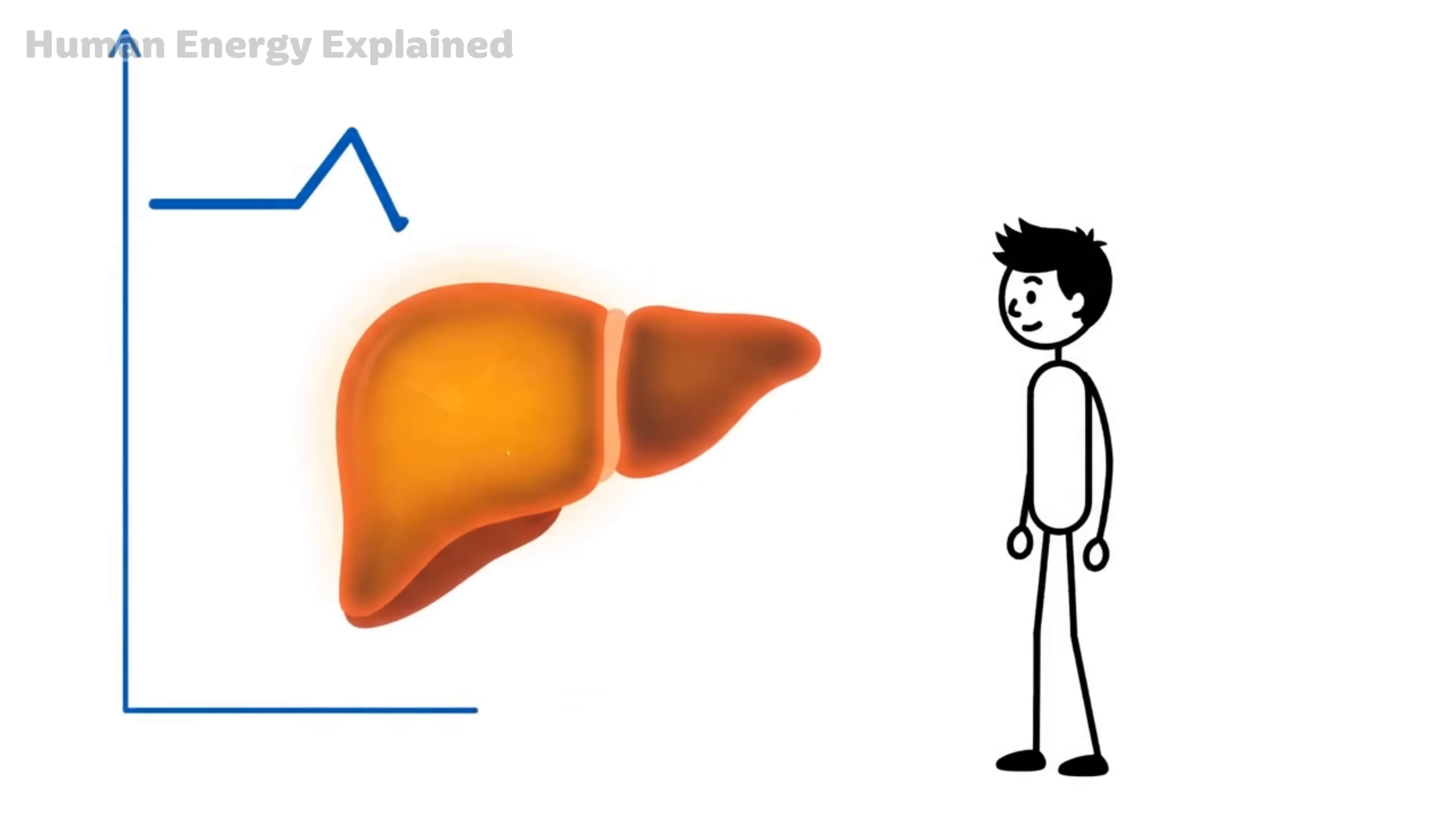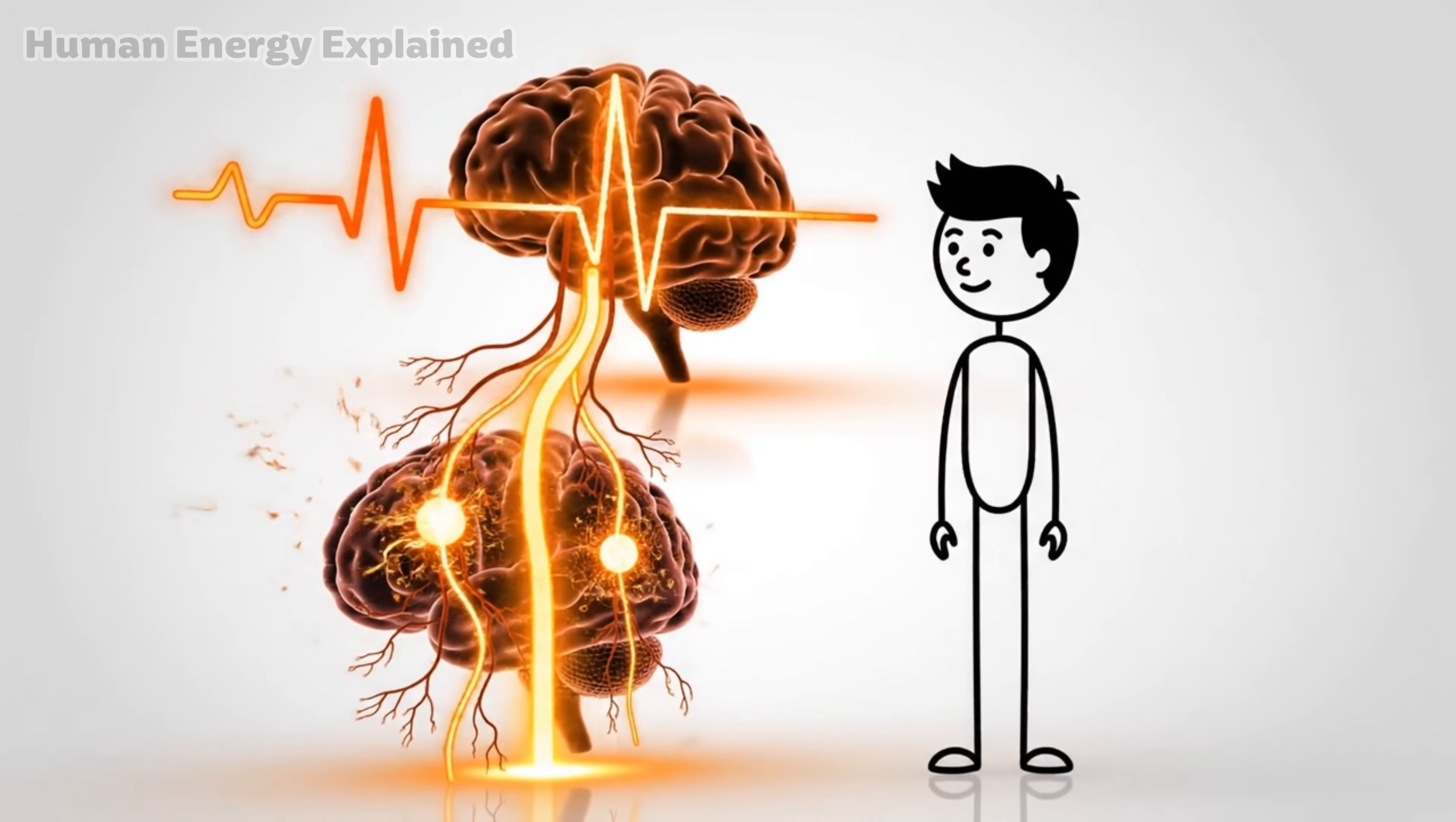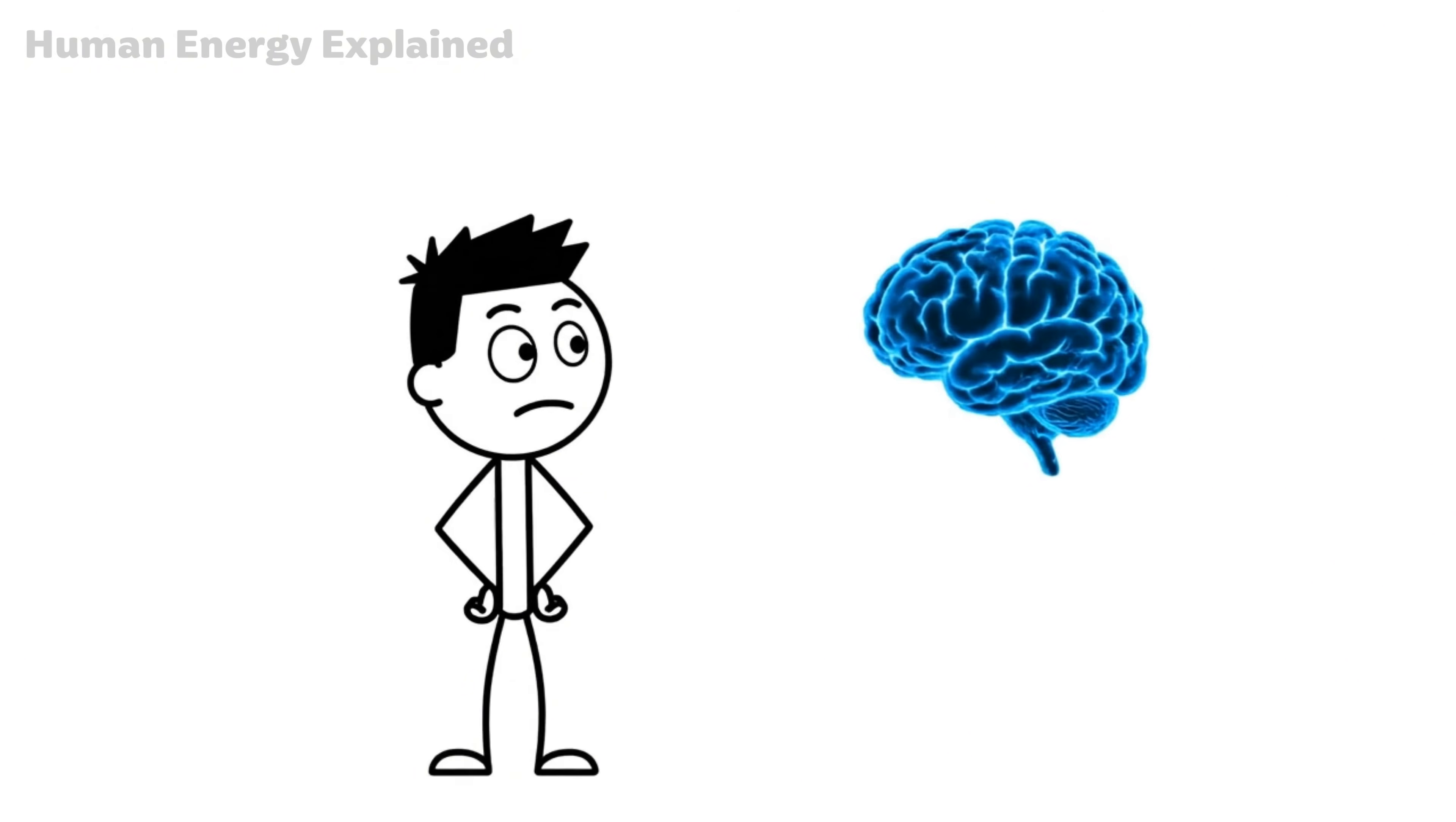But your body prefers the easy tank first. So in these early hours, your liver releases glycogen to keep blood sugar stable. Your cells are still running on glucose. And your brain, which burns through about 120 grams of glucose every single day, is demanding its usual supply. That irritability you feel? That's your brain throwing a tantrum, like a toddler who's been told no more candy.